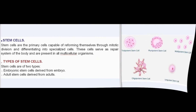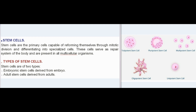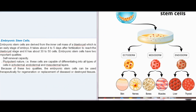Stem cells are primary cells capable of reforming themselves through mitotic division and differentiating into specialized cells. They serve as a repair system of the body and are present in all multicellular organisms. Stem cells are of two types: embryonic stem cells derived from the embryo, and adult stem cells derived from adults. Embryonic stem cells are derived from the inner cell mass of a blastocyst — an early stage embryo about four to five days after fertilization with about 30 to 50 cells. They have two important qualities: self-renewal capacity and pluripotent nature, capable of differentiating into all types of cells in ectodermal, endodermal, and mesodermal layers.